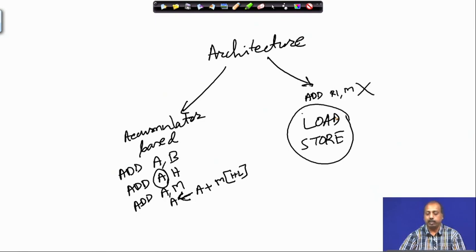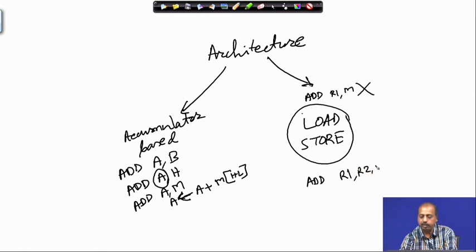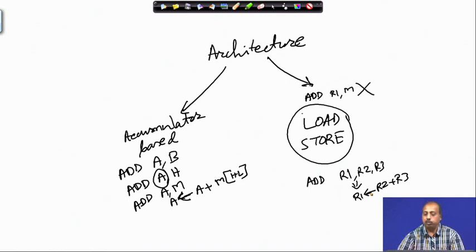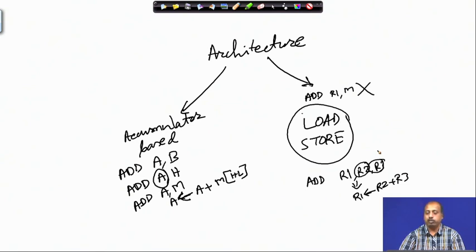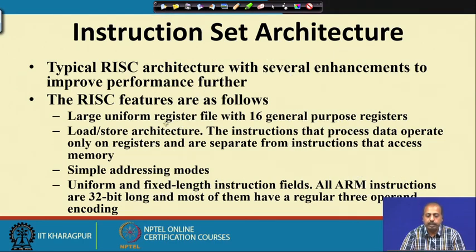In a load-store architecture, if I am performing an addition, the operands must be registers — for example, ADD R1, R2, R3 meaning R1 = R2 + R3. Before that, R2 and R3 must be loaded from memory using load instructions, or immediate operands can be used. This is how the architecture is classified as load-store, and ARM follows this load-store architecture.